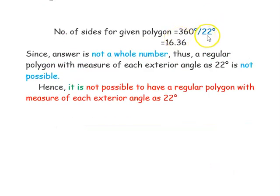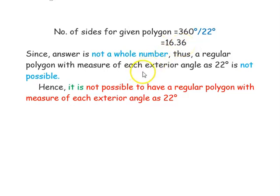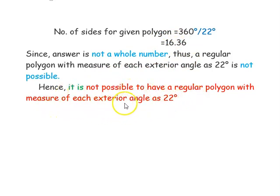Each exterior angle equals 22 degrees as given. So n equals 360 degrees divided by 22 degrees. If you simplify, you get 16.36. Since this is not a whole number, the regular polygon with each exterior angle of 22 degrees is not possible. We conclude that it is not possible to have a regular polygon with measure of each exterior angle as 22 degrees.